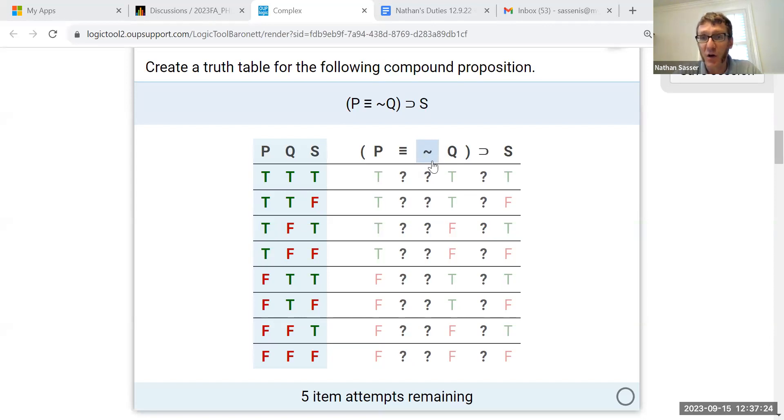Negation just reverses the truth value of whatever it's modifying. So if Q is true, then negation is false, false, true, true, false, false, true, true.